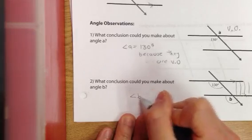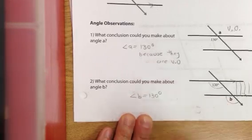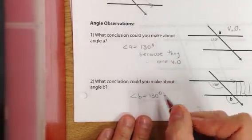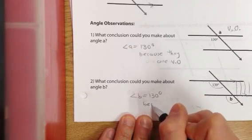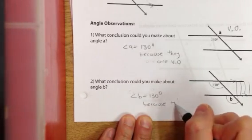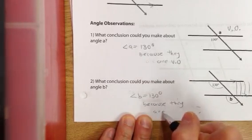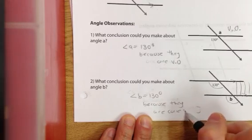So, we can conclude that angle B equals 130 degrees because they are corresponding angles. It's important that you write the rules because you'll need it for proofs.